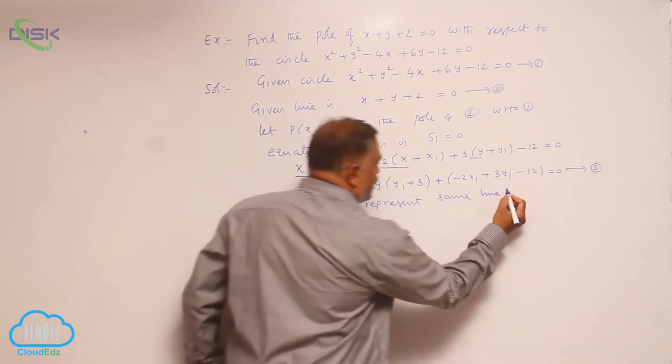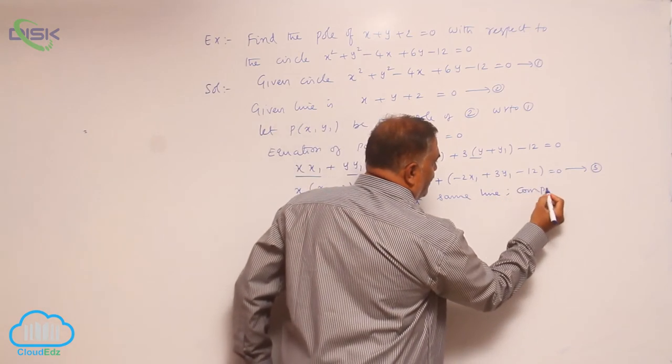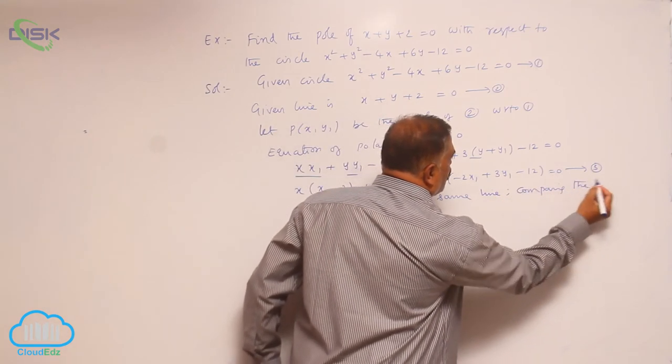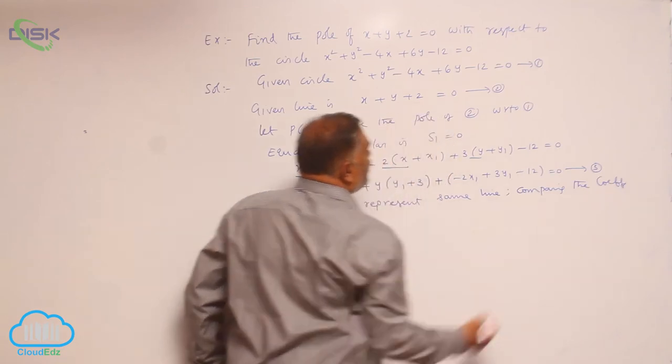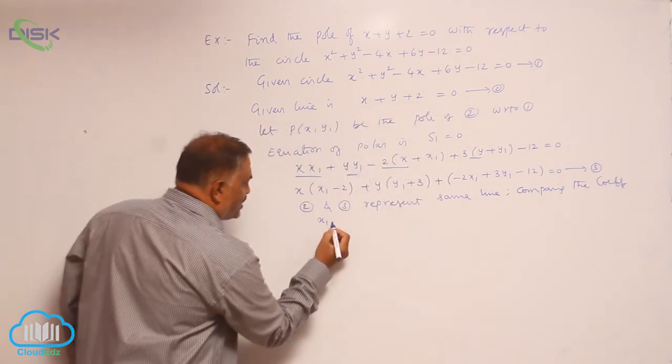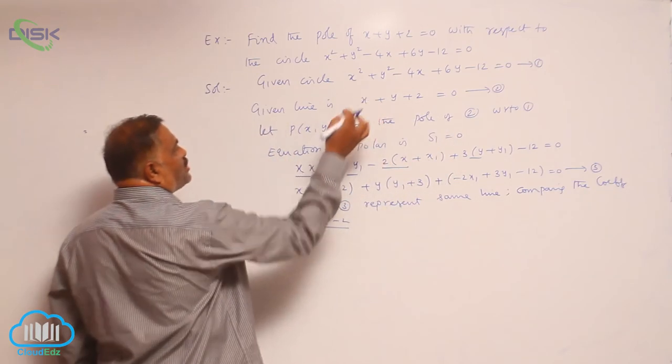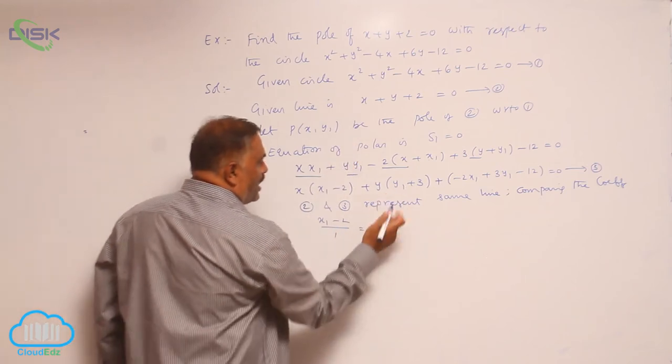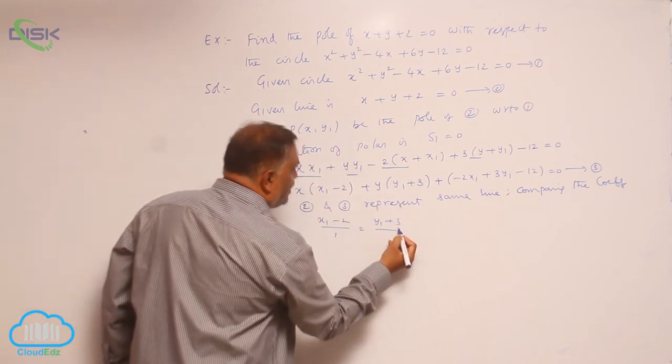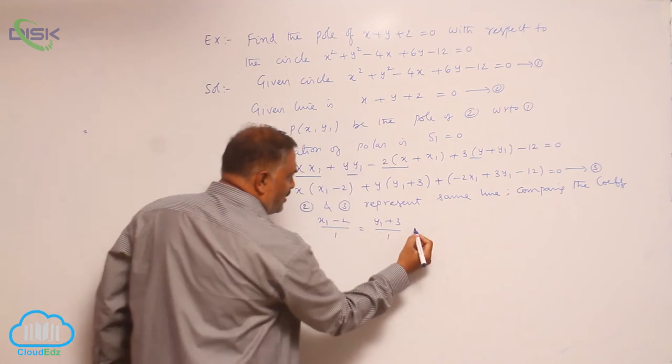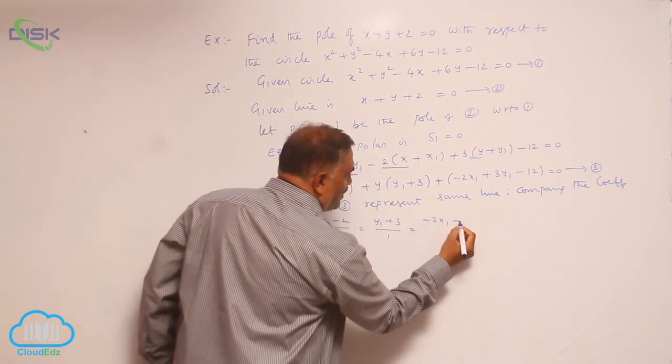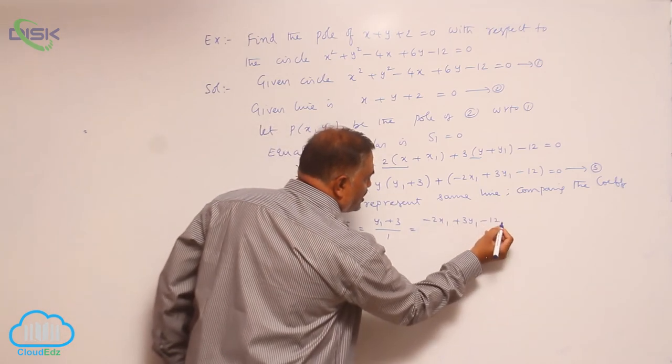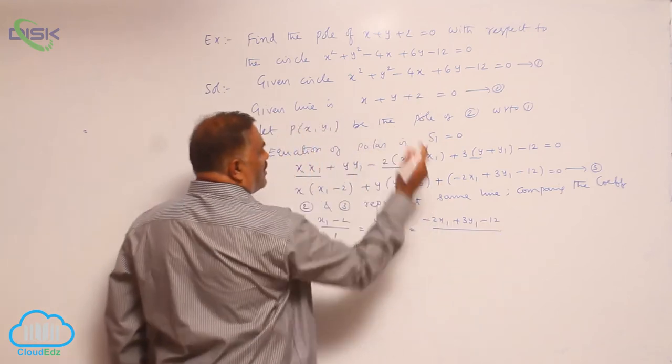Comparing the coefficients, we will get (x1 - 2)/1 = (y1 + 3)/1 = (-2x1 + 3y1 - 12)/2. The y coefficient is 1, -2x1 + 3y1 - 12 divided by the constant is 2.